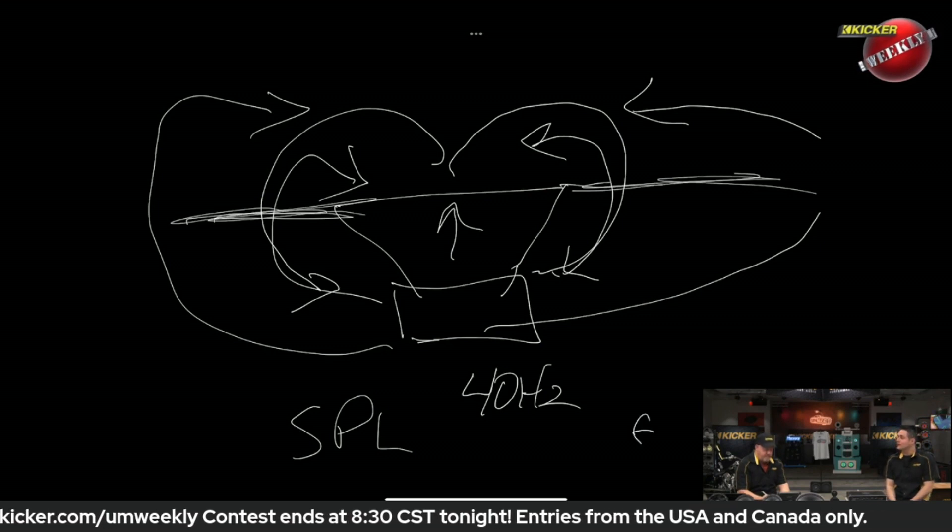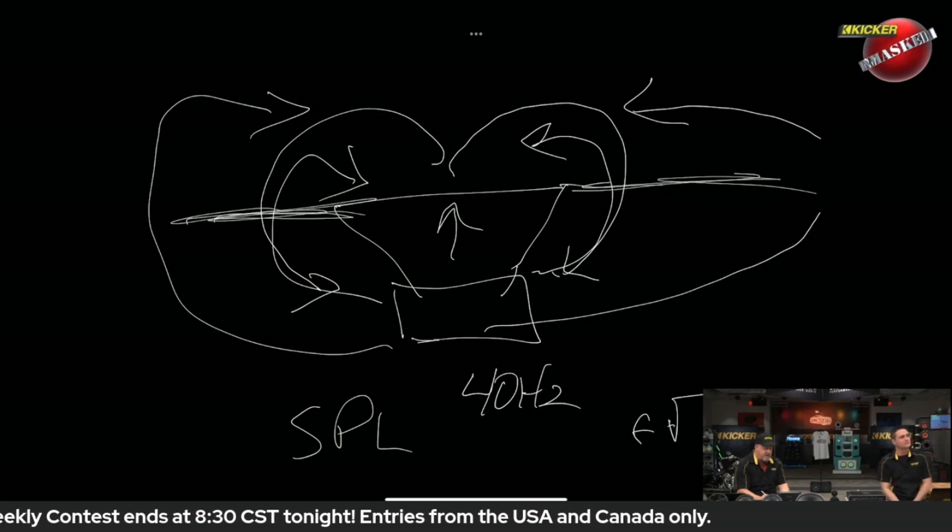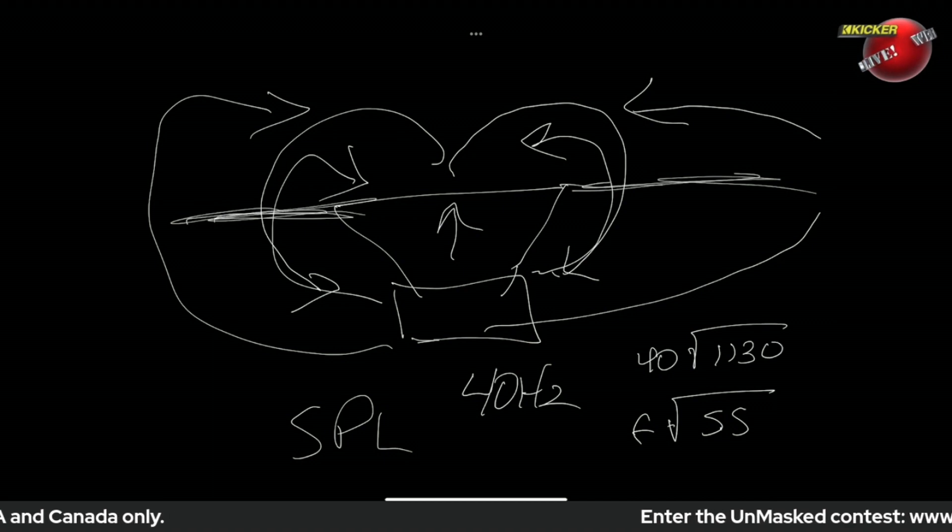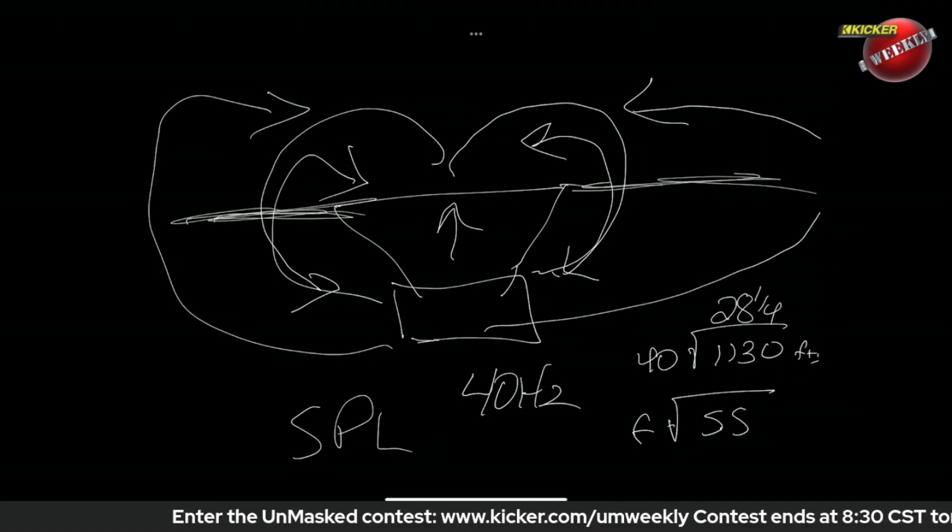You take the frequency divided by the speed of sound. So if we take 40 hertz and we divide it by the speed of sound, which is about 1,130 feet per second, that's going to give us a wavelength of 28 and one quarter feet. That's how long a 40 hertz note is.